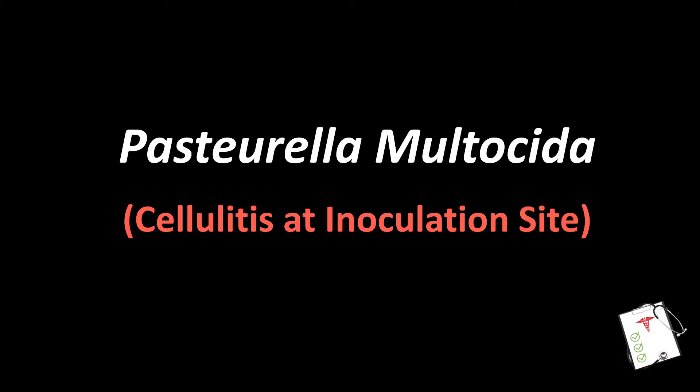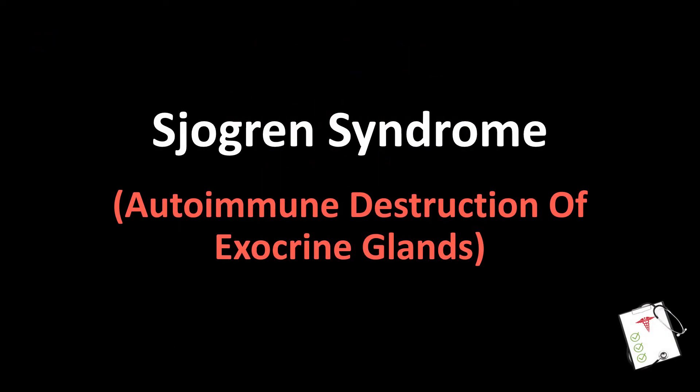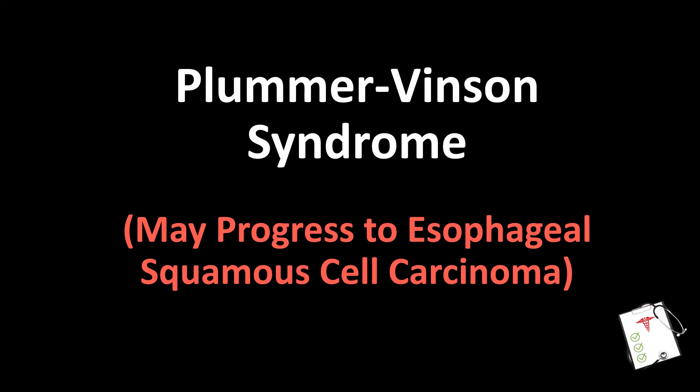Number 41 (continued): Dry eyes, dry mouth, arthritis. Answer: Sjögren's syndrome — autoimmune destruction of exocrine glands. Number 42: Dysphagia, esophageal webs, glossitis, iron deficiency anemia. Answer: Plummer-Vinson syndrome — may progress to esophageal squamous cell carcinoma.